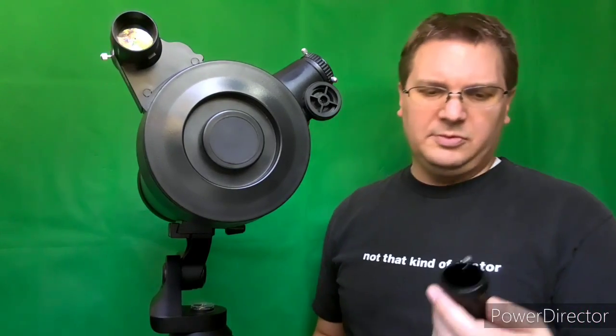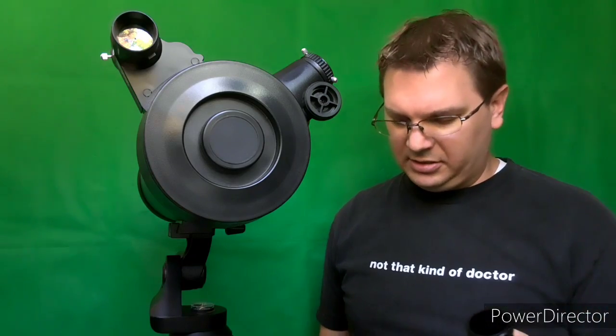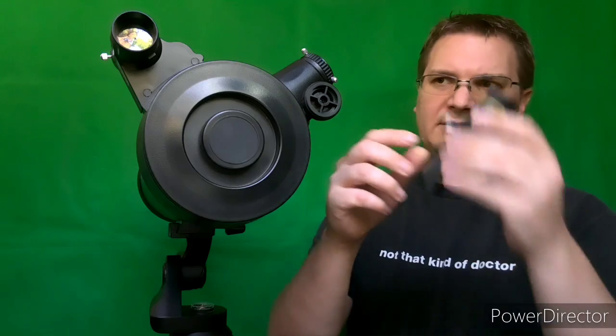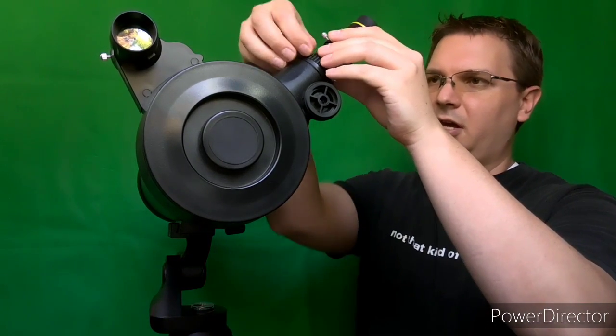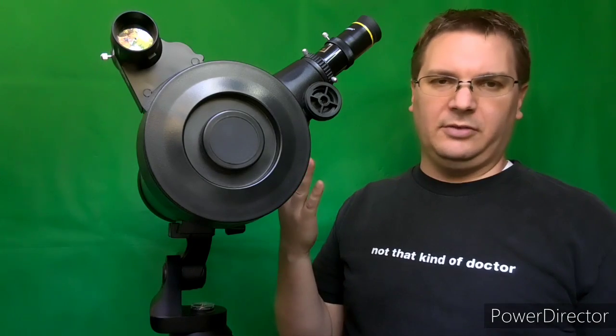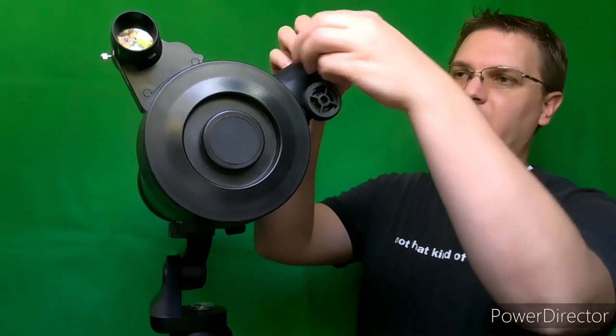Additionally comes with a 2x Barlow lens. What this will do is double the magnification effectively for each eyepiece. So you just put the eyepiece into your Barlow lens like this, slot it into the focus adjustment slot and there you go. You've doubled your magnification essentially, basically doubling the focal length of this particular telescope.